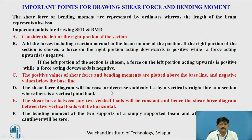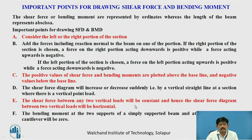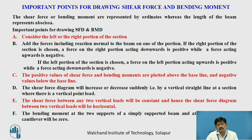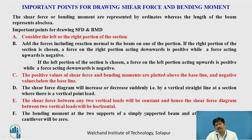The shear force diagram will increase or decrease suddenly by a vertical straight line at a section where there is a vertical point load. The shear force diagram between any two vertical loads will be constant and hence horizontal. The bending moment at the two supports of a simply supported beam and at the free end of a cantilever beam will be zero.